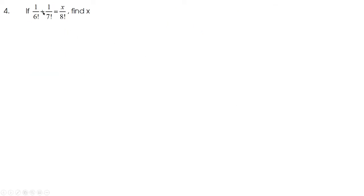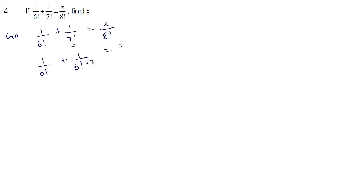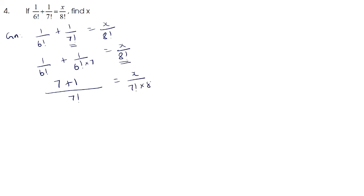Next question: if 1/6! + 1/7! = x/8!, find x. We can write 1/7! as 1/(6! × 7). Taking LCM as 7! on the left side, we get (7 + 1)/7! = 8/7!. The right hand side x/8! = x/(7! × 8). So these simplify to 8 = x/8, giving x = 8 × 8 = 64.